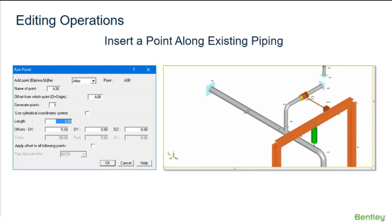A user can insert a point along an existing pipe run using the same command as inserting a new pipe run. The direction of the segment matters and must be taken into account when inserting any new component. AutoPipe will recognize when the user is inserting a pipe run at an active point that already has piping after that point.